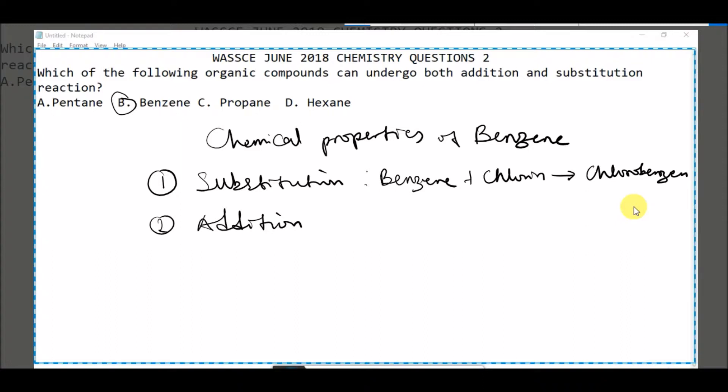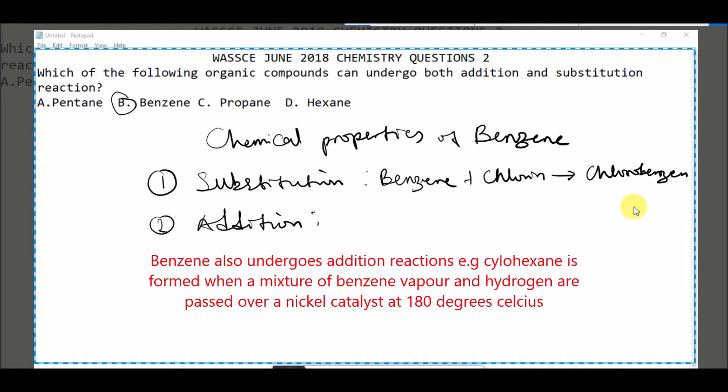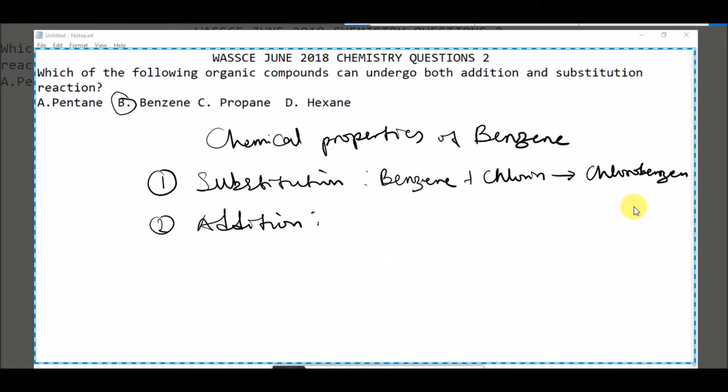Whereas for the addition reaction, you can have mixtures of benzene vapor and hydrogen passed over nickel catalyst at 180 degrees.